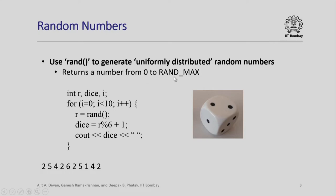Suppose we want to generate numbers between 1 and 6 to simulate the throw of a dice. We could write a small program segment in which I have defined r as a random number, dice as the number that will come out for the dice randomly. In this loop, I am generating 10 random numbers. Every time I call rand, a new random number r will be generated. When I take modulo 6 of that r and add 1 to it, I will automatically get a number between 1 and 6. If I execute this program segment, I will get this sequence.